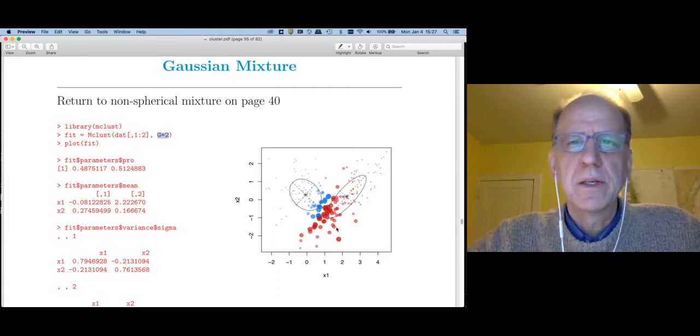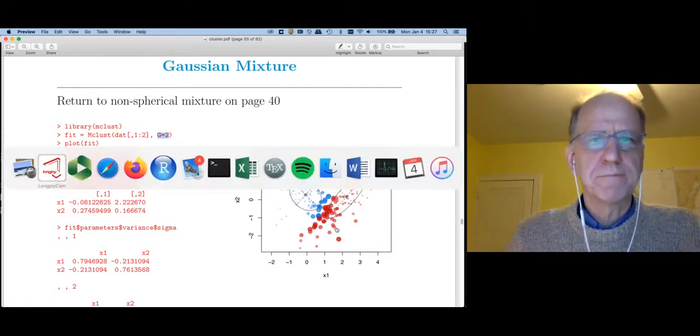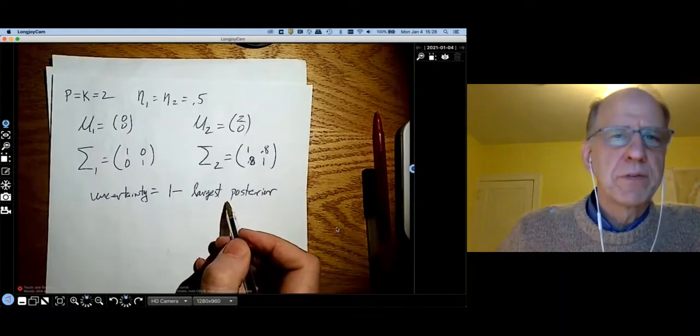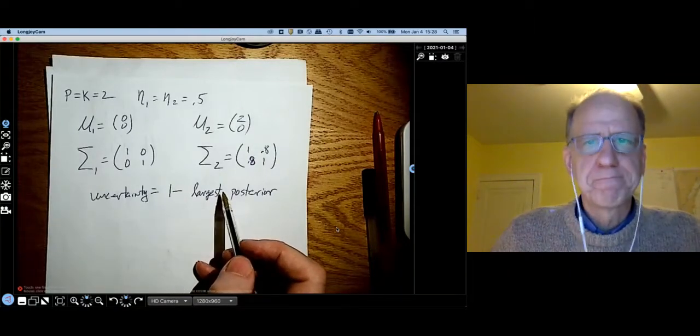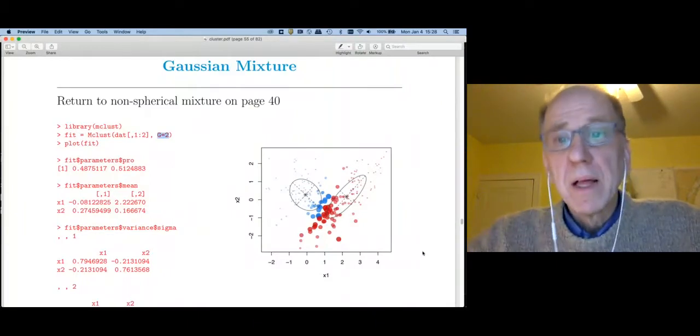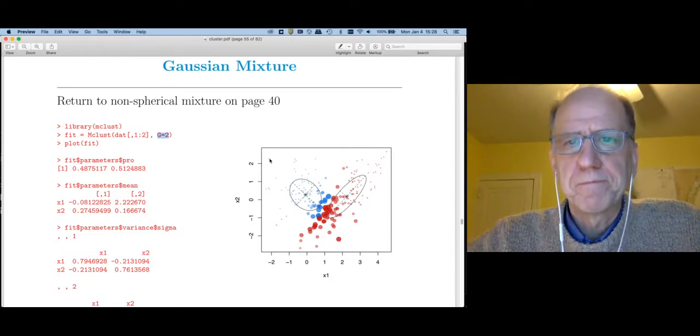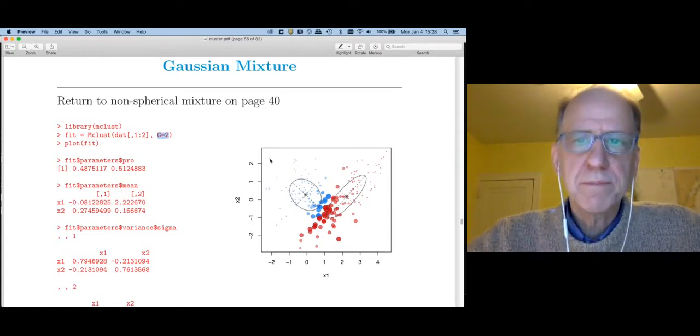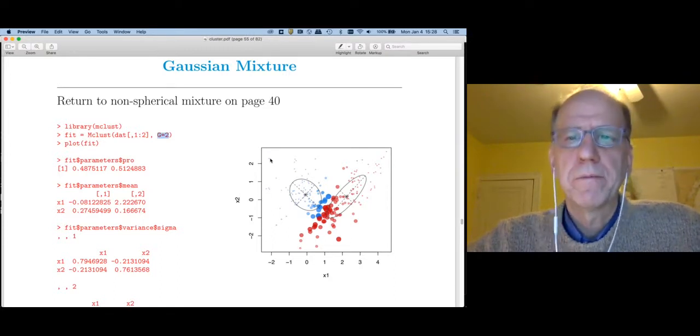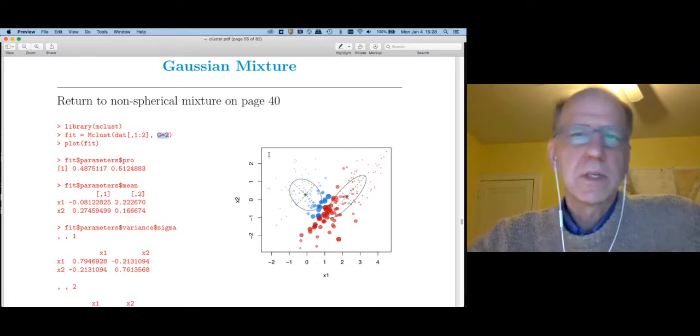This plot is actually showing the uncertainty. What is uncertainty? The uncertainty of an observation is 1 minus the largest posterior probability. To make sense of this let's take a look at a few observations. Consider this blue dot out here.